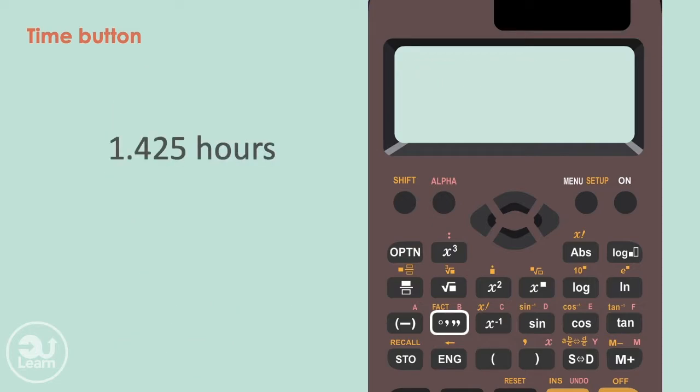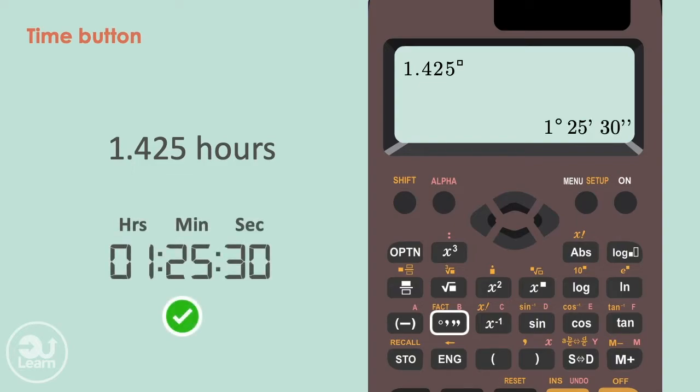What if we wanted to convert a decimal of hours to time? So let's convert 1.425 hours to hours, minutes and seconds. You simply type this number into your calculator and press the time button, followed by equals, and presto. You get the minutes and seconds the decimal represents.